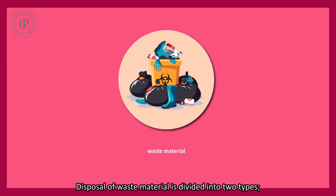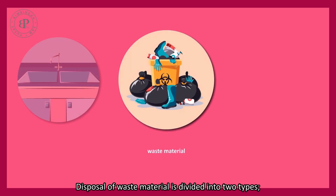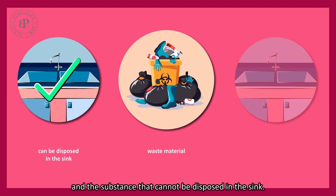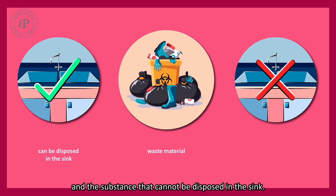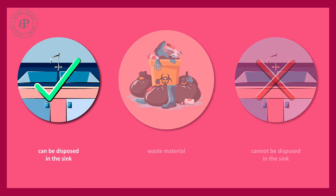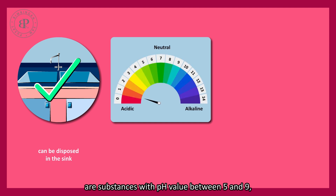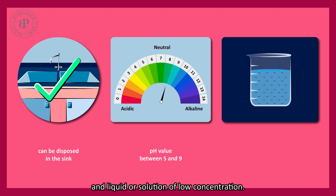Disposal of waste material is divided into two types: the substance that can be disposed in the sink and the substance that cannot be disposed in the sink. Substances that can be disposed in the sink are substances with pH value between 5 and 9, and liquid or solution of low concentration.